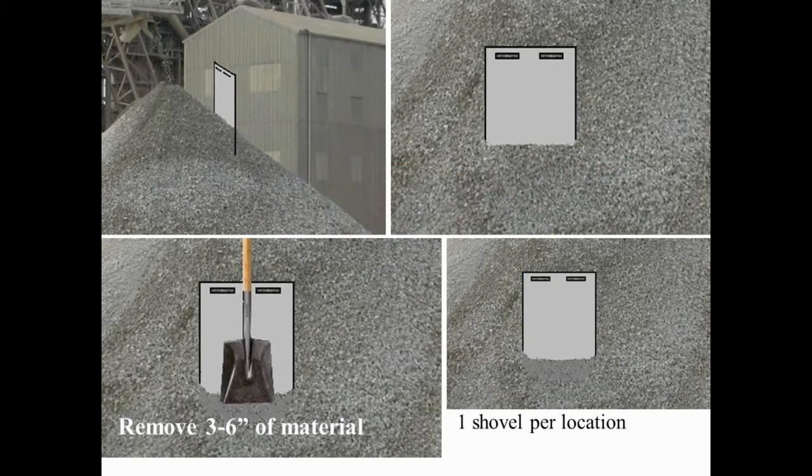The stockpile may also be sampled by placing a wood or metal shield upslope from the point of sampling to prevent loose aggregate from sliding down into the sampling area. Remove approximately three to six inches of material from the sampling area.